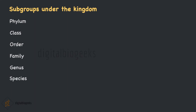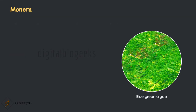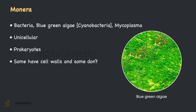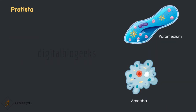Now let's understand the important characteristics of the five kingdoms. First, Kingdom Monera includes bacteria, blue-green algae (also called cyanobacteria), and mycoplasma. They are unicellular organisms and come under prokaryotes as they lack a nuclear membrane or membrane-bound organelles. Some of them have cell walls and some don't. These include both autotrophs and heterotrophs. Autotrophs can synthesize their own food by photosynthesis, but heterotrophs get their food from the surroundings. In the picture you can see the blue-green algae.